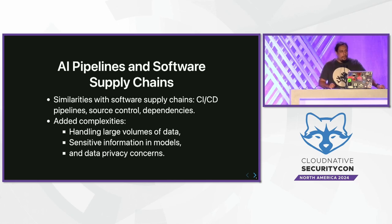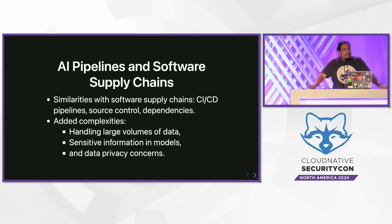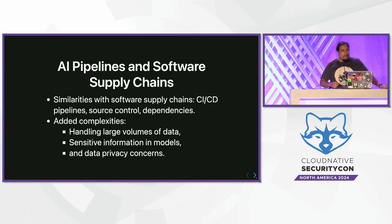This becomes especially important when we look at model inversion attacks, where attackers try to reproduce parts of the dataset just by looking at the model itself. A really interesting example is the Netflix Prize — they offered around a million dollars to improve recommendations. Over time, much of the anonymized data that was sent out was able to be re-identified by pairing it with social media and other sources, identifying a significant portion of individuals.